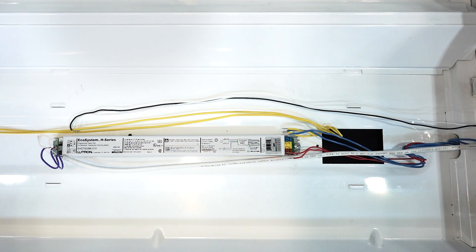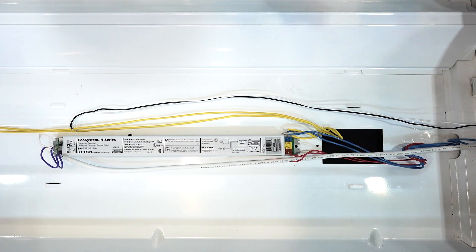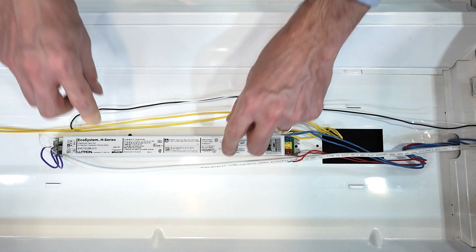You can then remove the existing ballast. You can remove one screw and loosen the other one, sliding the ballast out.